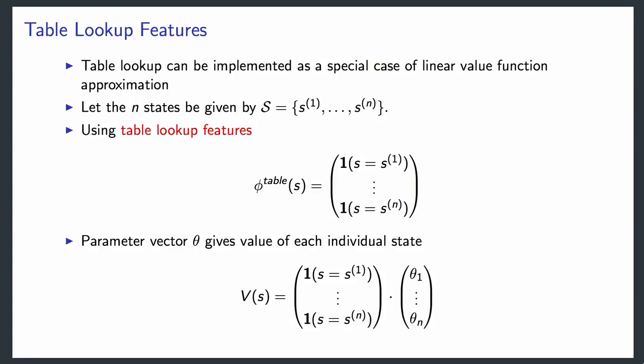A special case of this is the tabular setting, which we can recover by using a one-hot feature vector—exactly one value is one and all others are zero, with one such feature per state. This shows that linear function approximation generalizes the tabular case. Of course, this also illustrates the problem with the tabular case: it requires a very large feature vector for large problems.